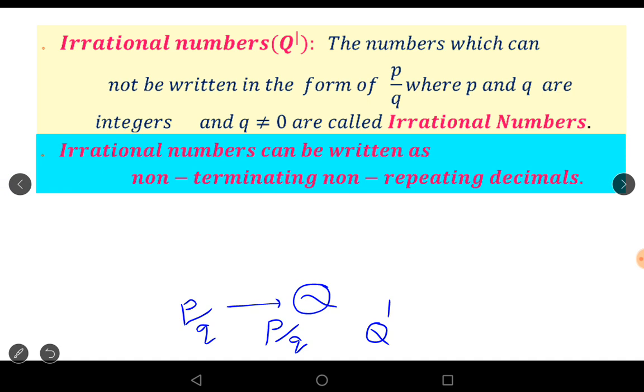Irrational numbers can be written as non-terminating, non-repeating decimals. Irrational numbers sometimes in the decimal form. Non-terminating, non-recurring decimals are called irrational numbers.